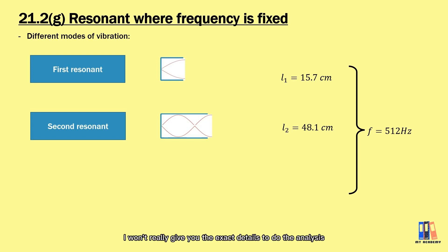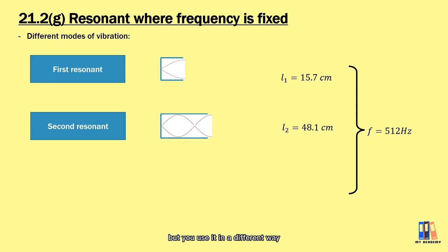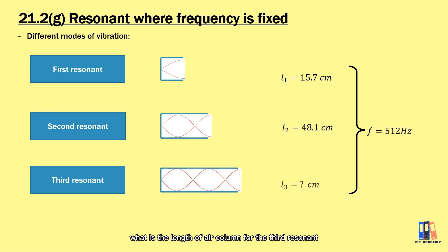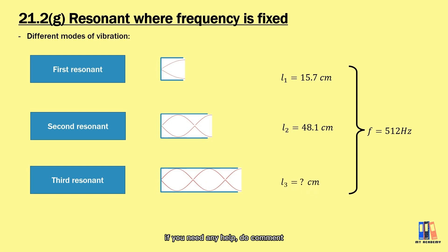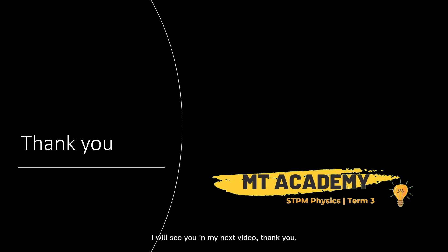I won't give you the full details for the next analysis — here is a challenge for you. The steps are still the same: first find the relationship between length and wavelength including the end correction, then apply the formula in the appropriate way. My question for you: what is the length of the air column for the third resonance in this case? I'll leave the answer in the comments below — if you need help, do comment. That's all for today's discussion. If you have any questions, leave them in the comment section. Do leave a like and subscribe to my channel. See you in the next video. Thank you.